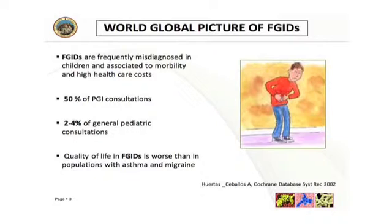This condition is very frequent in the pediatric population but also in the adult population, and it is frequently misdiagnosed in children. These conditions are associated with morbidity and high healthcare costs. About 15% of pediatric gastrointestinal consultations are about functional gastrointestinal disorders, and between 2–4% of general pediatric consultations concern abdominal pain or functional dyspepsia. The quality of life in these patients, and also in their families, is worse than in populations with asthma or other chronic conditions such as migraine.